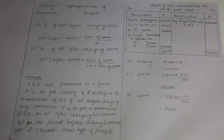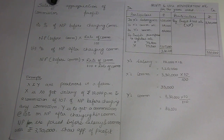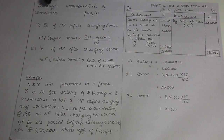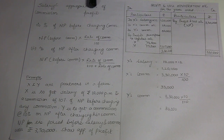This is an extension of the earlier video on profit and loss appropriation account. The items we cover are salary and commission. We all know that salary and commission are both an appropriation of profit for any partners. So how does their treatment work in the profit and loss account?